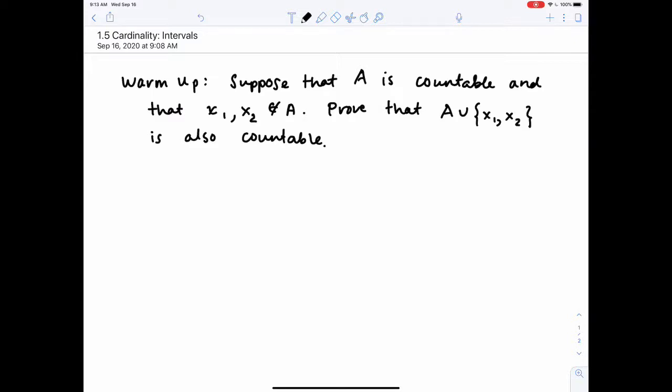So before we get started on that problem, here's a warm-up problem. Suppose that A is countable, and that x₁ and x₂ are two real numbers that are not in our countable set. What I want to do is prove that if I take A and I add just two more points, x₁ and x₂, that that doesn't change the cardinality of my set. In particular, I will still have a countable set when I'm done. So I recommend pausing the video and trying to see if you can define the map that proves that A together with these two new points is a countable set.